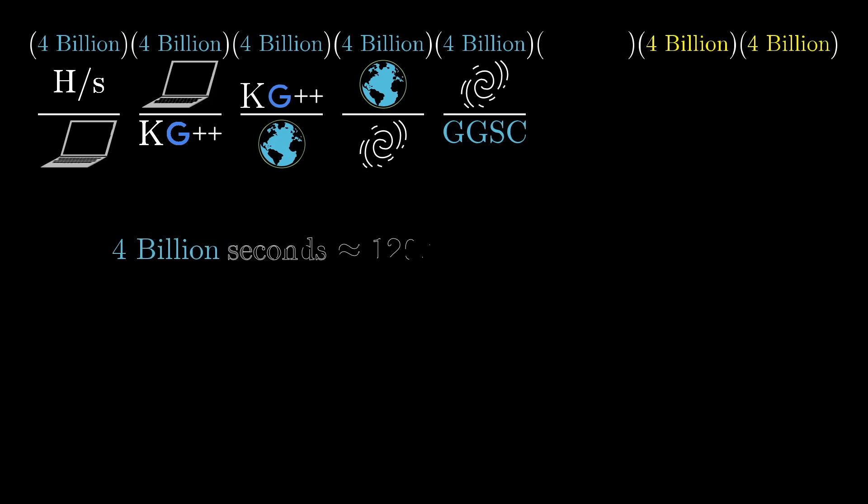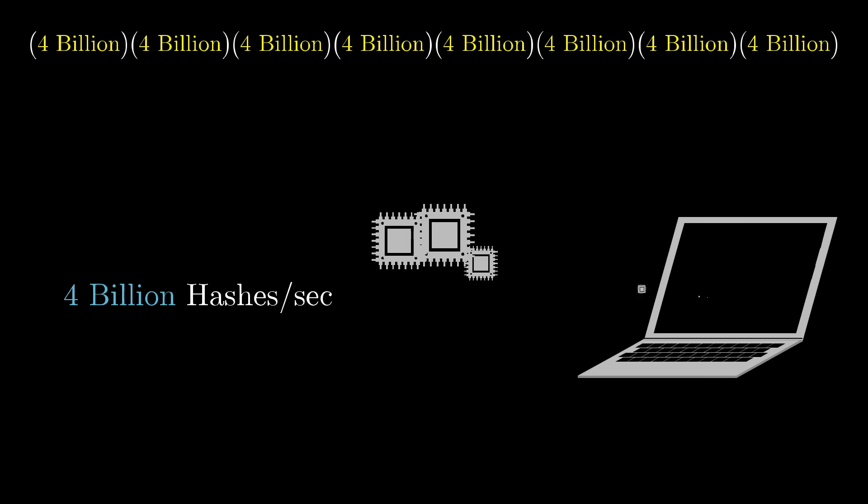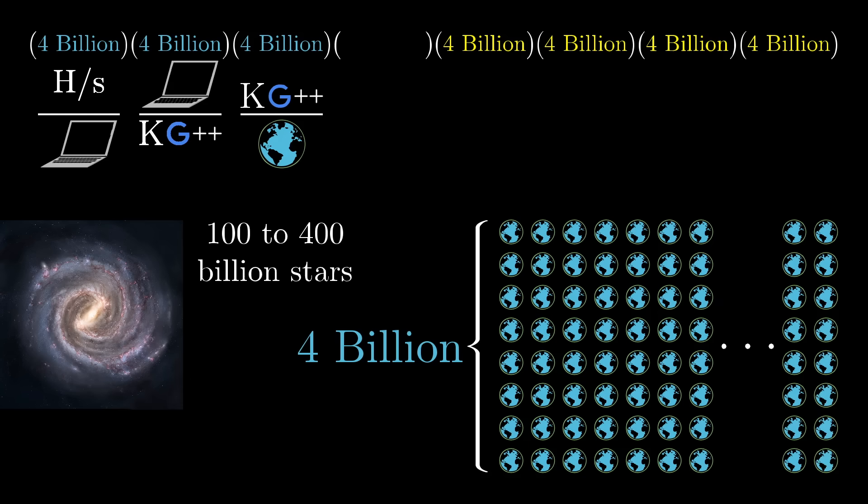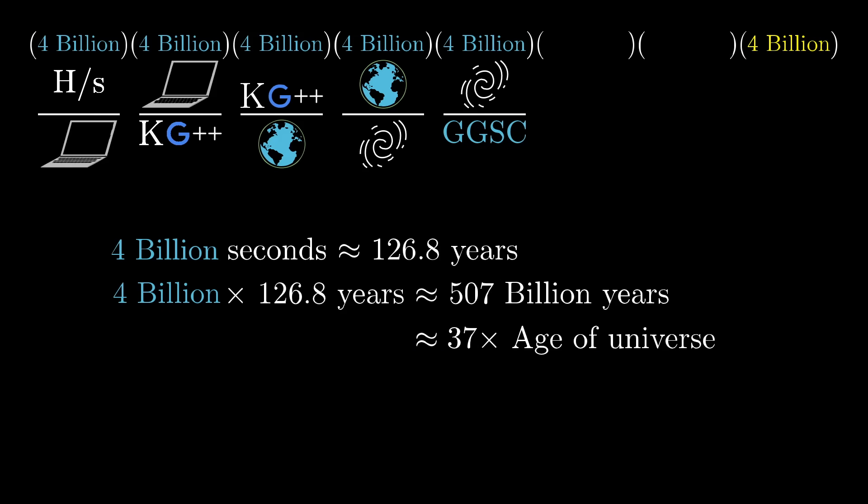Now, 4 billion seconds? That's about 126.8 years. 4 billion of those? Well, that's 507 billion years, which is about 37 times the age of the universe. So even if you were to have your GPU-packed, kilogougle-per-person, multi-planetary, gigagalactic computer guessing numbers for 37 times the age of the universe, it would still only have a 1 in 4 billion chance of finding the correct guess.